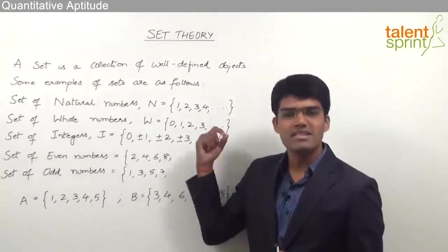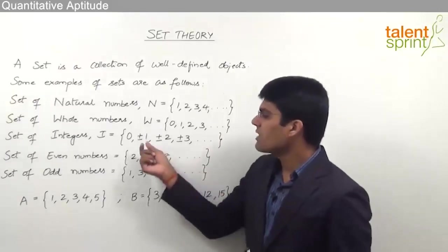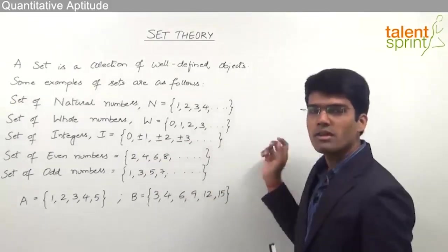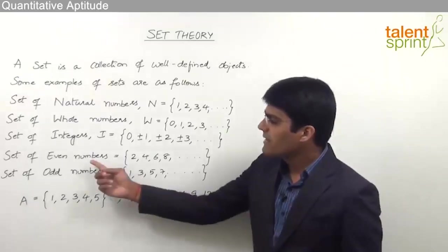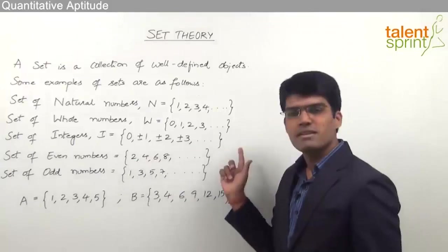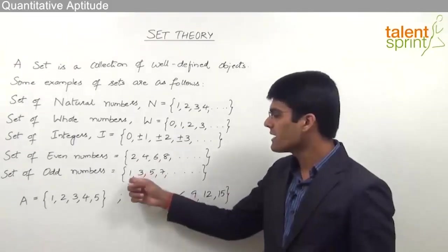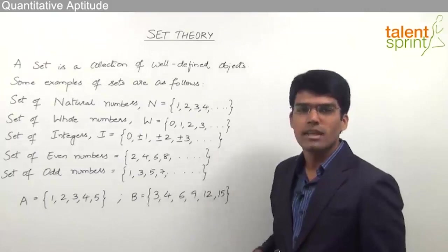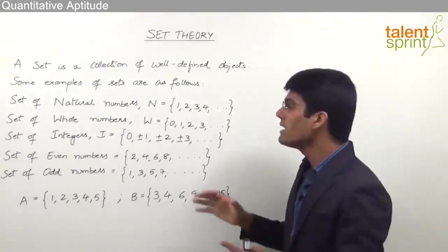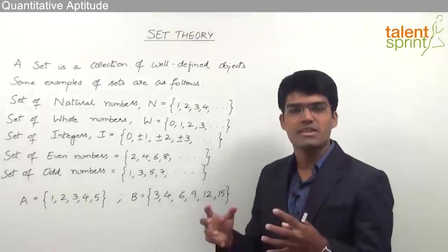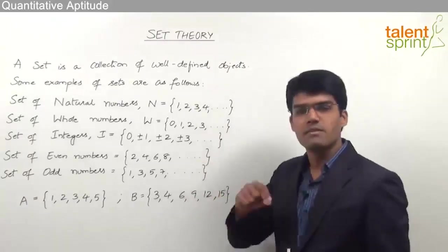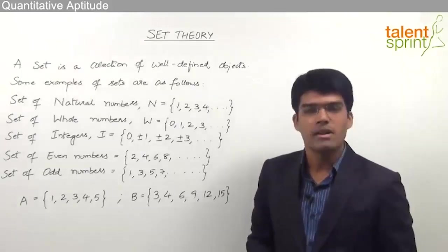The set of integers, denoted by I, has 0, ±1, ±2, ±3 and so on up to infinity. Likewise, the set of even numbers has 2, 4, 6, 8 up to infinity, and the set of odd numbers has elements 1, 3, 5, 7 up to infinity. These are all examples of sets — collections of well-defined objects — where each number belonging to the set is called an element of the set.